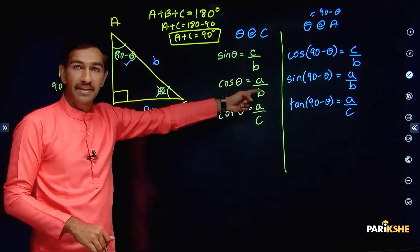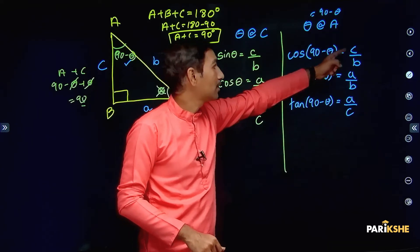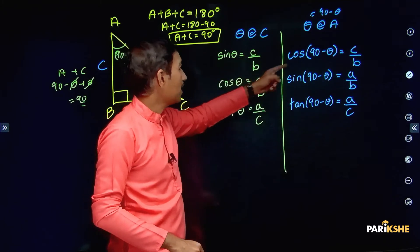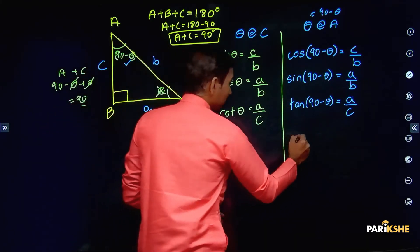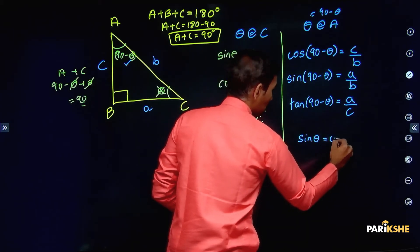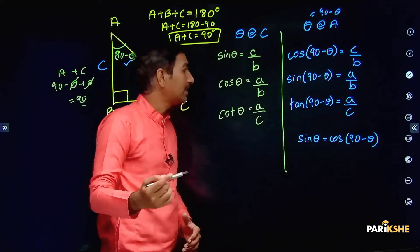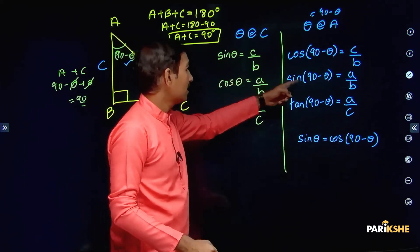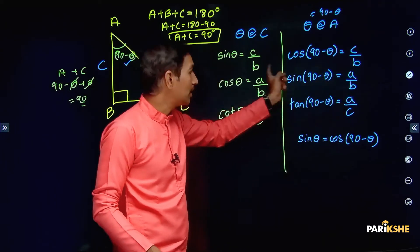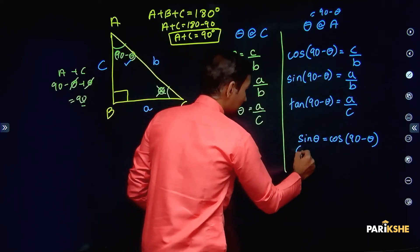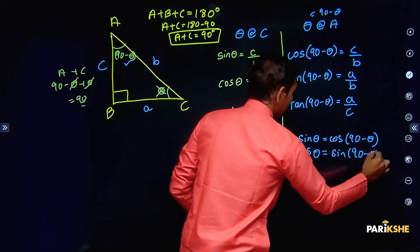When angle C equals theta, sin theta gives C by B. When angle A equals 90 minus theta, cos(90 minus theta) also gives C by B. On the other side, cos theta gives A by B, and sin(90 minus theta) also gives A by B. So we can write: sin theta is equal to cos(90 minus theta), and cos theta is equal to sin(90 minus theta).